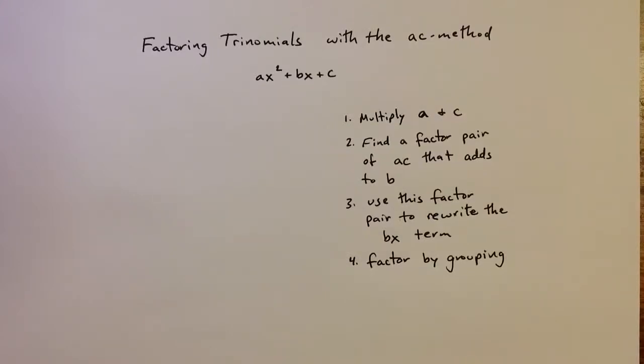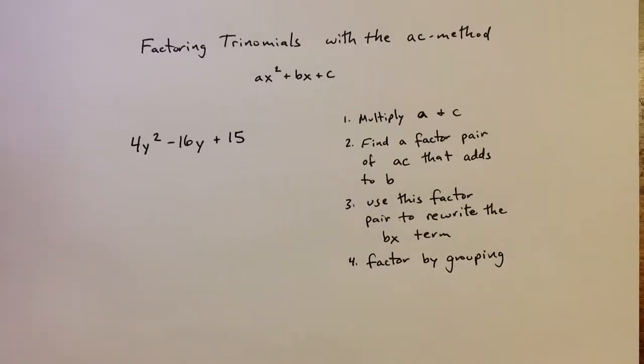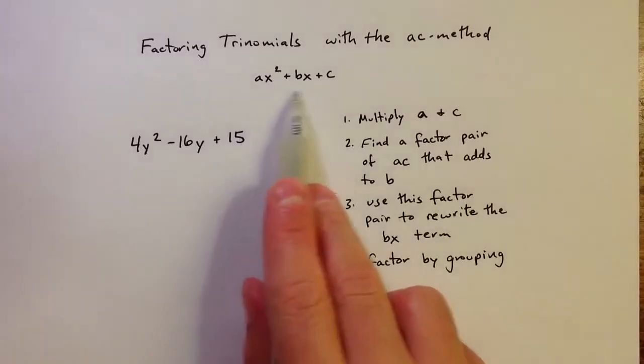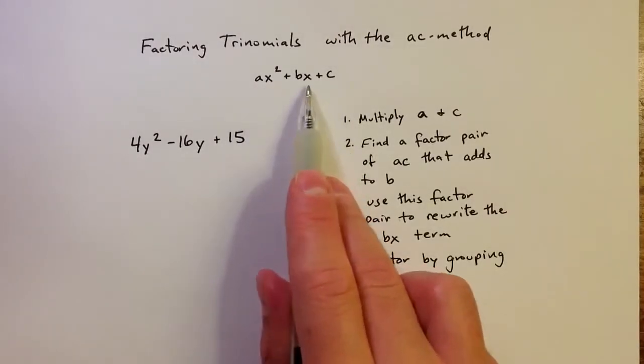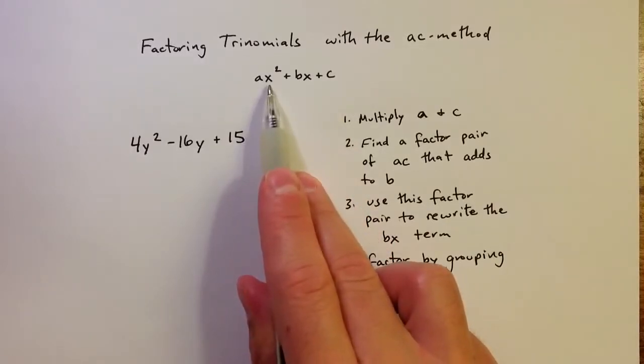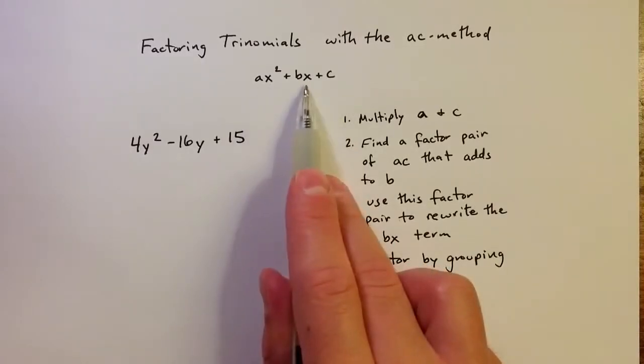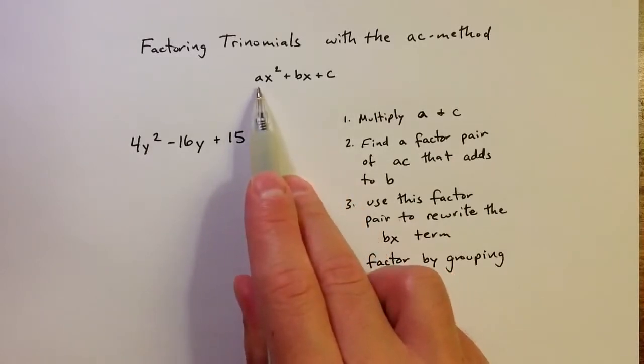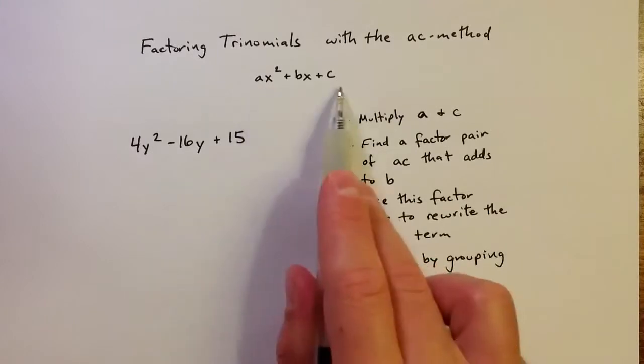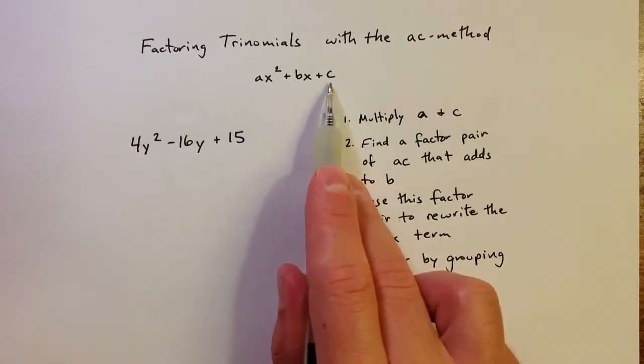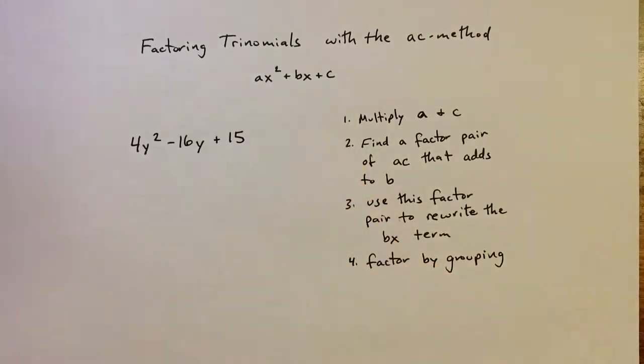I'd like to take a look at some examples of applying the AC method to factor a trinomial. So the AC method refers to this general form for writing a trinomial, ax squared plus bx plus c, where x is our variable. The a refers to the coefficient of the squared term, whatever the variable is, and c refers to the constant coefficient.